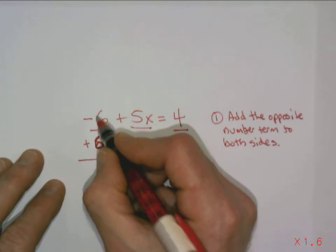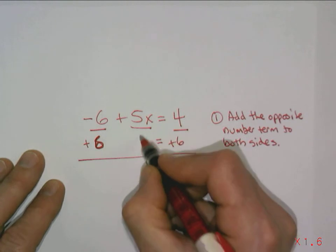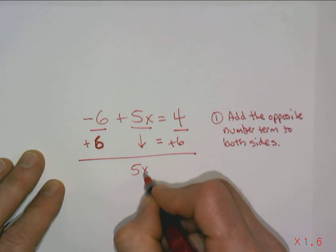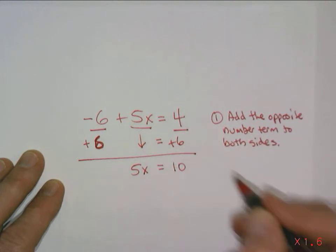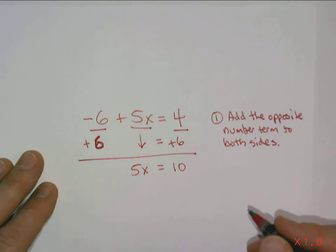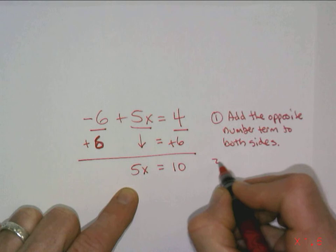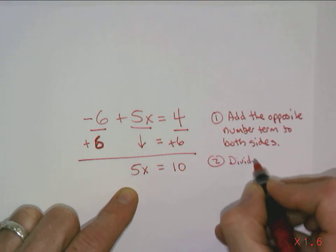And since we did the additive inverse of negative 6, it makes 0 so this goes away. The 5x is still positive nothing changed. And if we put the 4 and the 6 together we get 10. And so we did our first step. And now because we have multiplication, we're going to divide. This is like a one-step problem we've done before.